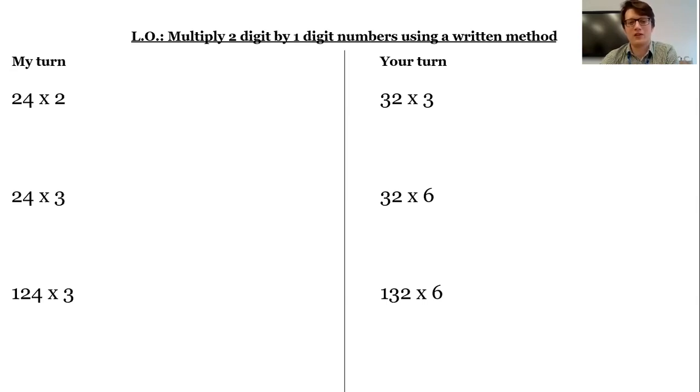So first we're going to start by multiplying two-digit numbers by one-digit numbers using a written method. So if we start by looking at this one, 24 times 2.